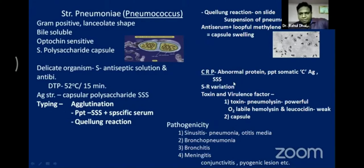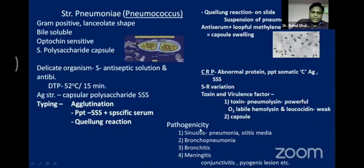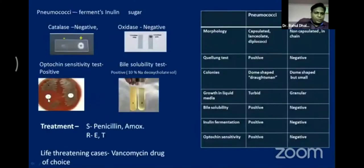C-reactive protein is an abnormal protein that rises during infections and can be estimated in the laboratory. The virulence factors of Streptococcus pneumoniae include pneumolysin — a very powerful toxin — and the capsule, which inhibits phagocytosis. Due to its pathogenic nature, Streptococcus pneumoniae can cause sinusitis, bronchopneumonia, bronchitis, meningitis, and conjunctivitis. The optochin disc creates a sensitive zone that lyses bacterial cells.